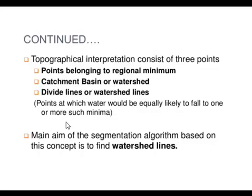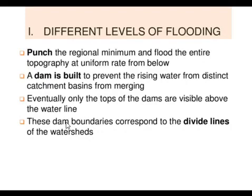Topological interpretation consists of three different points: regional minimum, catchment area, and watershed lines. Let's see how to find the watershed lines. For this we will have to study basic concepts of geography. In geography we studied different natural calamities like floods and earthquakes.